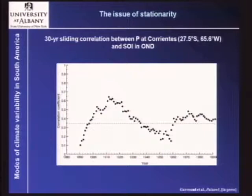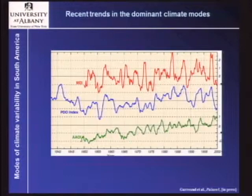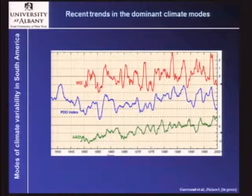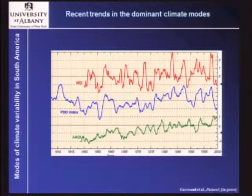Another potential problem is that some of these modes have shown unusual behavior over the last few decades. This is particularly true for the Southern Annular Mode, which has shown a trend towards its positive polarity, likely related to ozone depletion in the stratosphere over Antarctica. It's possible that if we have proxies and need to calibrate or validate over that time period, we're not just picking up a signal of natural variability anymore.